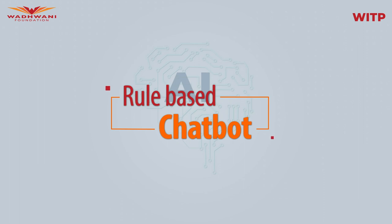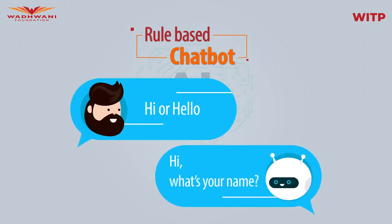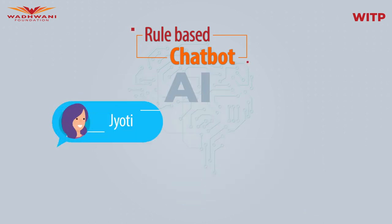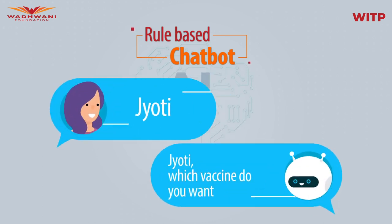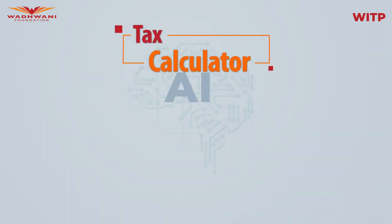The first example is a rule-based chatbot. We can hard-code some if-else conditions — for example, if a person says 'hi' or 'hello,' the algorithm will respond with 'hi, what's your name?' or 'hello, what's your name?' If the user says 'Jyoti,' the chatbot will use the name and ask 'Jyoti, which vaccine do you want?' Based on Jyoti's response, there will be further rule-based steps.